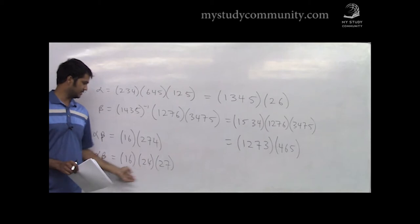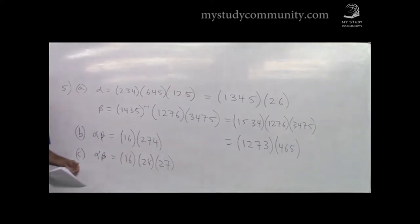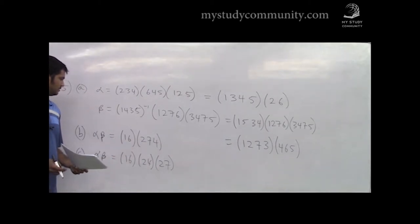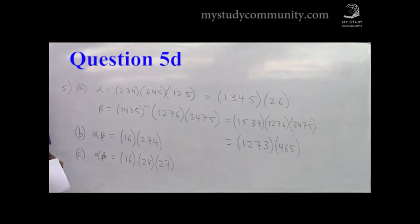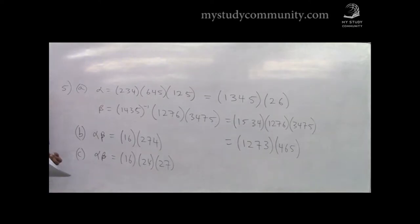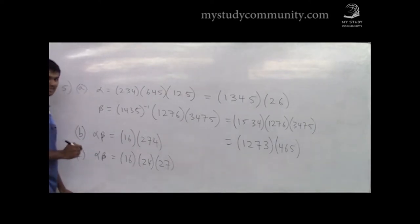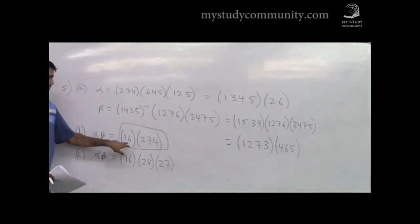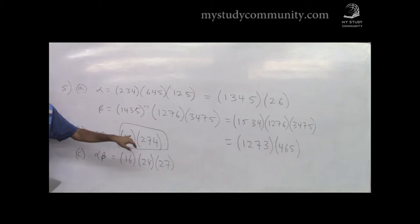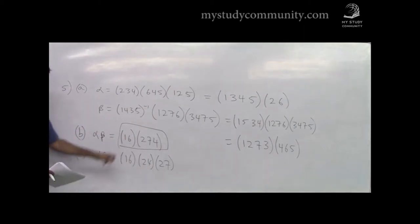You can check that this is the same result. Part D: state the order and parity of alpha·beta. The order of a permutation is the LCM of the lengths of its disjoint cycles. I have one cycle of length 2 and one of length 3, so the LCM of 2 and 3 is 6 — the order is 6.